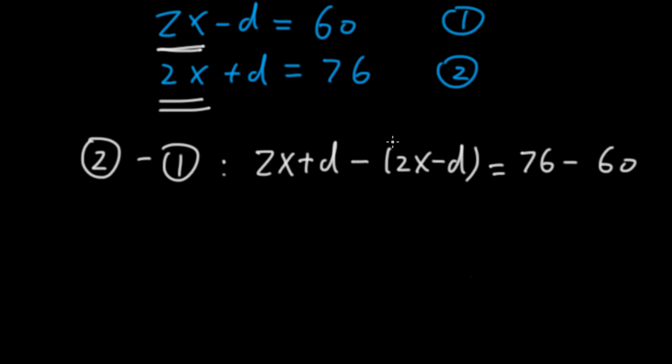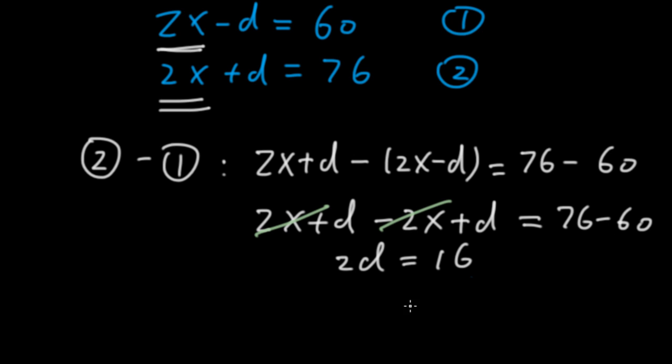Because there's a minus sign in front of the parentheses, we need to change sign when we remove the parentheses. So 2x plus D minus 2x plus D equals 76 minus 60. Now the 2x cancel out. 2D equals 16. D equals 8.